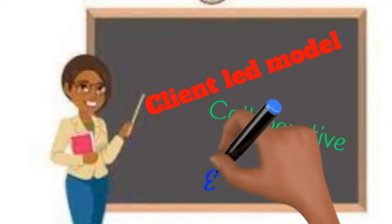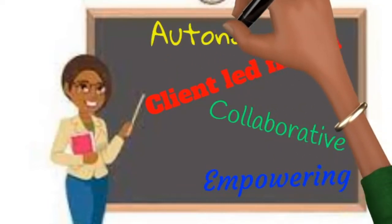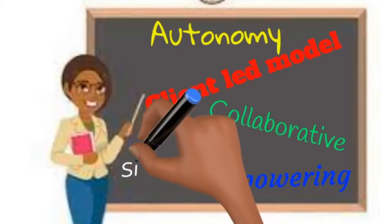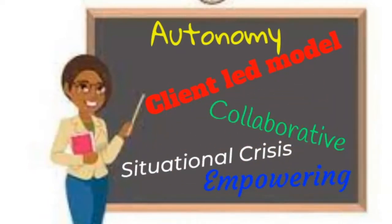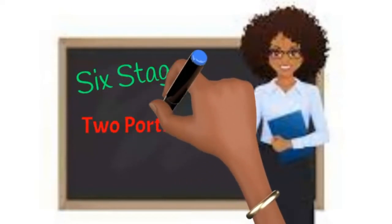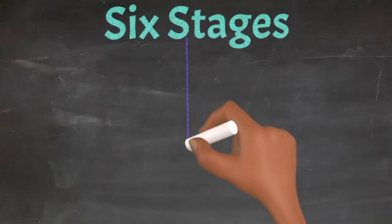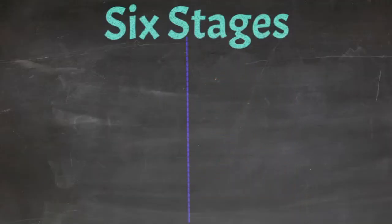This collaborative model is designed to empower the client in order for them to regain control of their autonomy. This kind of model is really good for situational crisis, especially in situations like sexual assault. The model is broken up into two portions: the listening portion and the action portion. The entire model has six different stages — three stages for the listening portion and three stages for the action portion.